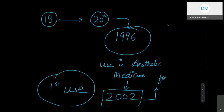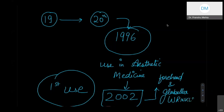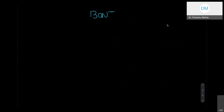The first use was done in 2002, for the wrinkles of the forehead as well as the glabella — the glabellar wrinkles. When you try to show an angry face, you see lines over the glabella; those are called glabellar wrinkles. That was the first documented use of Botox in aesthetic medicine in 2002. For the rest of this lecture, I'll be calling it Botox instead of botulinum toxin.